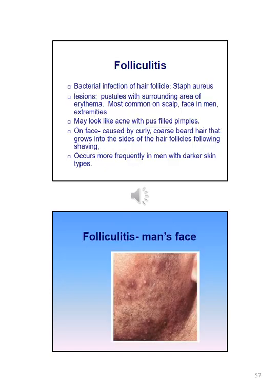Folliculitis is a bacterial infection of the hair follicle; a common cause is Staph aureus. Lesions usually present as pustules with surrounding erythema. It is most commonly found on the scalp, face in men, and extremities. It may look like acne with pus-filled pimples on the face. It can be caused by curly, coarse hair that grows into the hair follicles following shaving, and occurs more frequently in men with darker skin types.